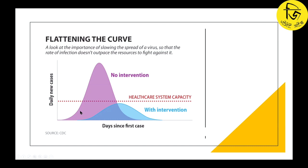In this case, we have a healthcare system capacity line. We don't want the health system to become over-exhausted. This arbitrary line depends on the country's health system capacity — including the number of hospitals, ICU beds, ventilators, and emergency department capacity.